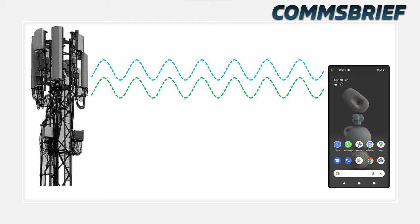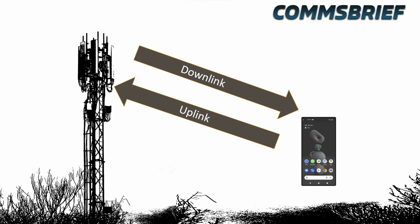So it's a two-way street, just like any relationship, but this is actually technically better because you have dedicated communication links for both parties to send and receive. These communication links are called uplink and downlink. Downlink is the communication from the mobile network base station to the mobile phone, and uplink is the communication from the mobile phone back to the mobile network base station.